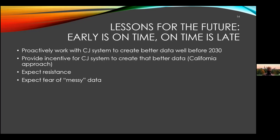As my high school lacrosse coach told me, early is on time, on time is late. Over the next couple of years is the time to proactively work with the local criminal justice system to create better data, so that in 2030 you can be like Maryland and New York and other states that had been thinking about this very early — in which this was a plug-and-play problem for 2020. Maryland had its data cleaned and ready to go and they got 90-something percent through the census batch API, and it took like a day because they'd done the work ahead of time.